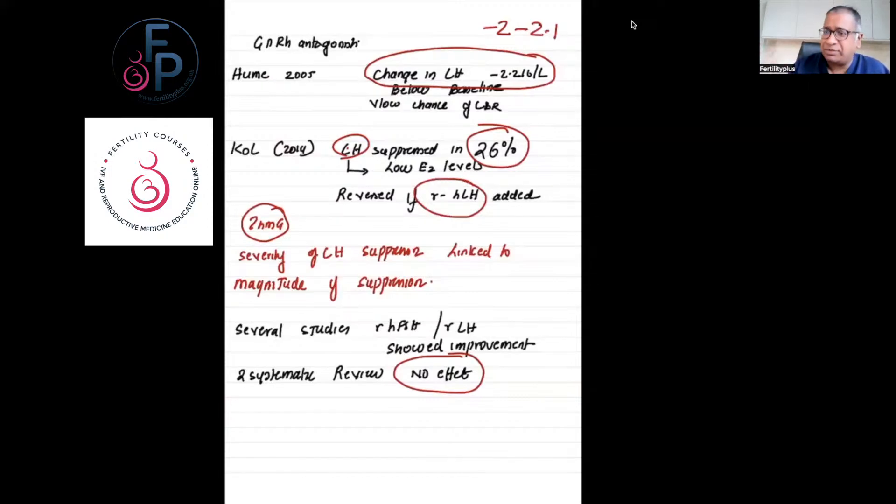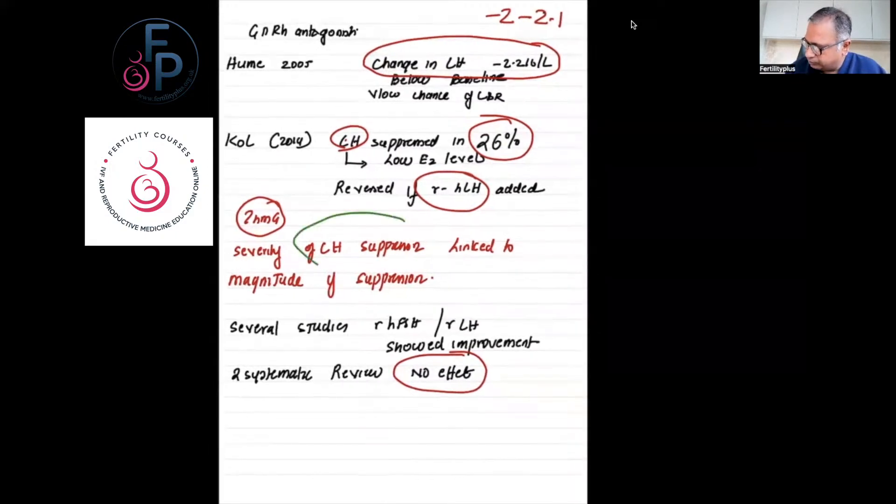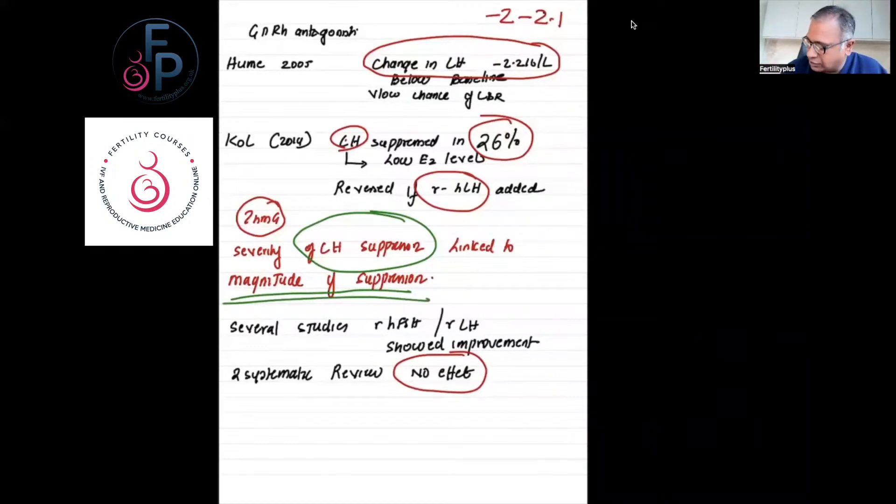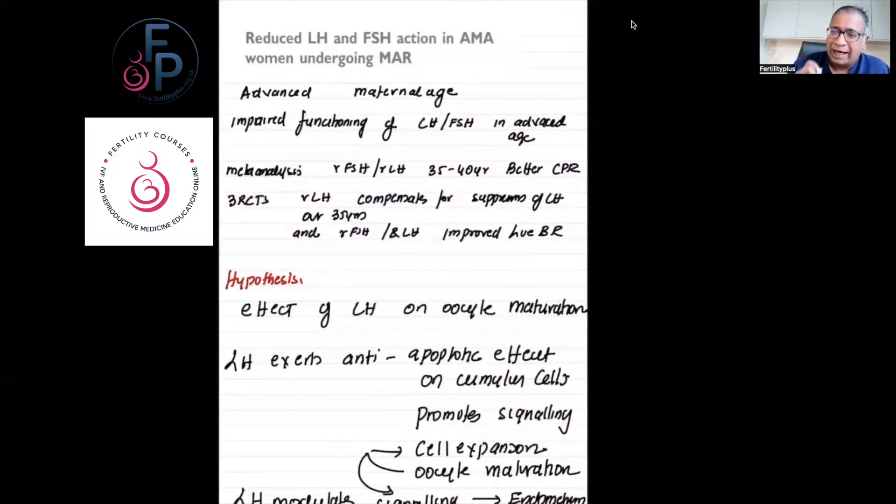The question now comes up: are we ignoring HMG? This paper is not about HMG, but are we in some cases causing a negative effect on stimulation by not giving HMG? The severity of LH suppression is linked to the magnitude of suppression—it's not just one level but how low it goes down. Several studies have shown that when you combine recombinant FSH and recombinant LH, it showed an improvement. There have been two systematic reviews done so far and they have found no effect.